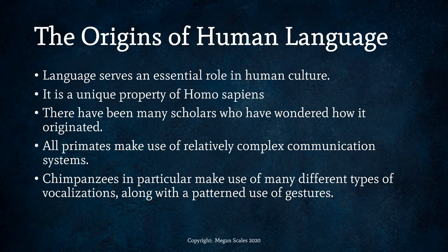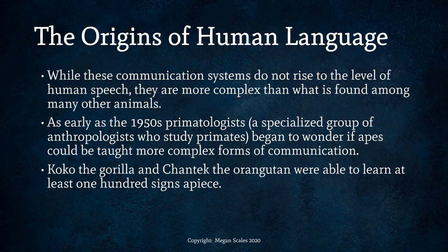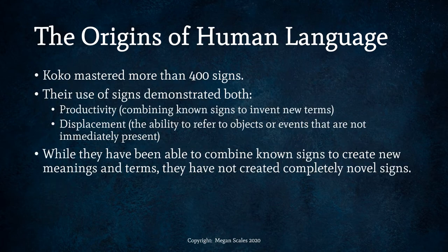Chimpanzees make use of many different types of vocalizations along with a patterned use of gestures. While these communication systems do not rise to the level of human speech, they are more complex than what is found among many other animals. As early as the 1950s, primatologists began to wonder if apes could be taught more complex forms of communication. Koko the gorilla and Chantek the orangutan were able to learn at least 100 sign language signs apiece, and Koko mastered more than 400 signs. Their use of signs demonstrated some elements of human language, including productivity and displacement.